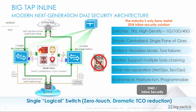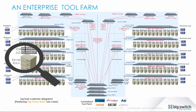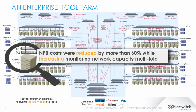Here's a diagram of an actual Tier 1 financial customer's BigTap deployment for monitoring 40-gig uplinks from the top of racks, leveraging the Tap Every Rack use case. The part shaded in blue is the BigTap monitoring fabric. Previously, the customer was monitoring only at the core for cost reasons, so he had zero visibility into his east-west traffic within the data center. With the BigTap deployment, his NPB costs were reduced by more than 60% while his visibility into his network increased multifold.